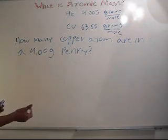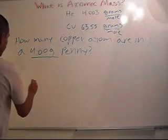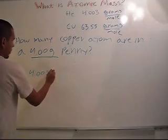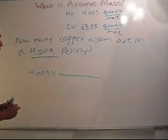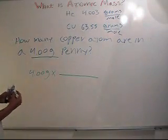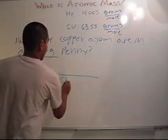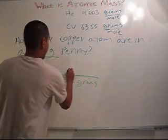So where do we start? What do we know right now? All we know is 4.00 grams, so let's start there. We're going to multiply by something, right? What else do we know? We know the atomic mass of copper, which is 63.55 grams per mole.